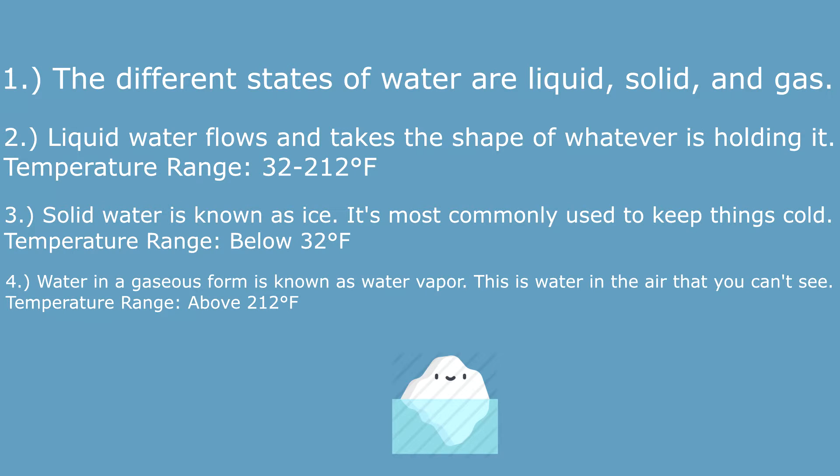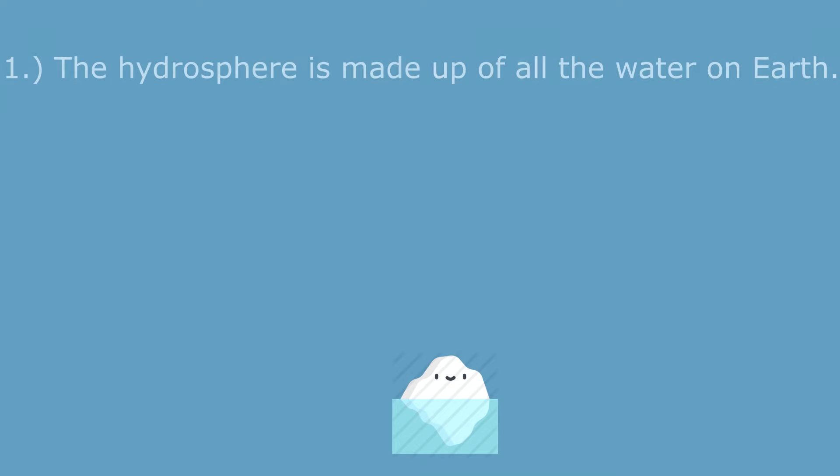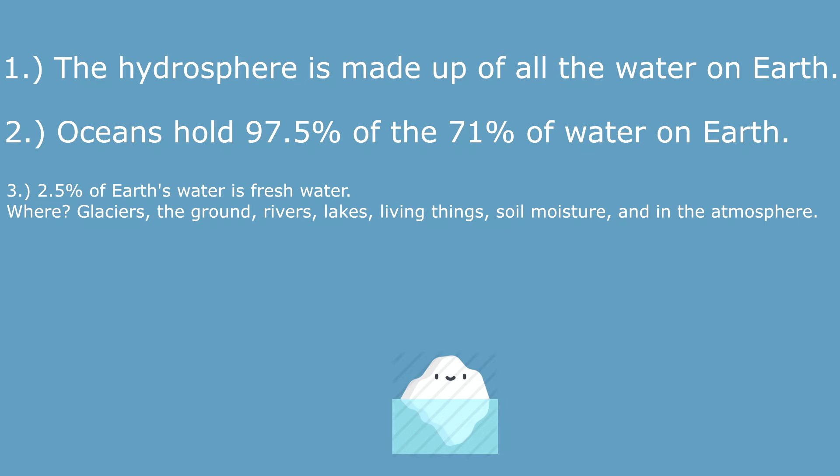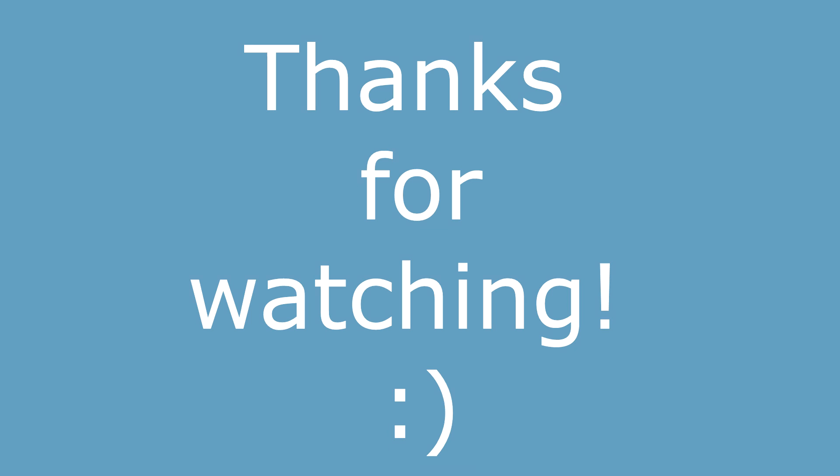Next, we learned about where we can find water. The hydrosphere is all the water within the Earth. Oceans hold 97.5% of the 71% of water on our Earth. The other 2.5% of water is freshwater. This water is found in glaciers, the ground, rivers, lakes, living things, soil moisture, and in the atmosphere. Accessible freshwater is scarce when compared with the amount of total water in our hydrosphere. Thanks for watching.